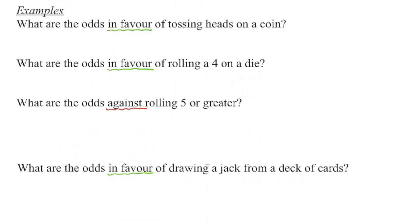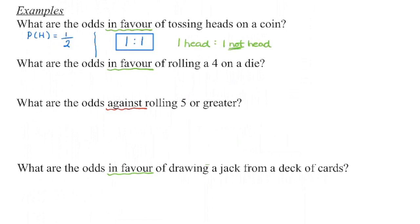For example, what are the odds in favor of tossing a heads on a coin? I'm going to start with probability. The probability of getting a head when we toss a coin is one half — there is one head on a coin and there are two possible outcomes: heads or tails. Now I'm going to turn that into odds in favor. This represents my favorable outcomes: there is one head on the coin and then there is one other side that is not a head. So odds in favor: there is one thing we want, which is the head, and one thing we do not want, which is the tail.